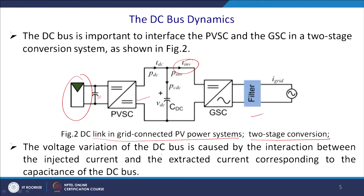The voltage variation of the DC bus is caused by the interaction between the injected current and the extracted current corresponding to the capacitance of the DC bus. Current is entering here and current is leaving there. If more current is entering and less is leaving, or if you are trying to supply more load, the capacitor voltage will sink. If you are putting charge into the capacitor, voltage will swell, and if you are taking out charge, voltage will sink. Thus you are required to have a balance between IDC and INV.